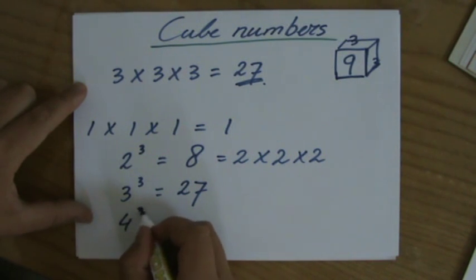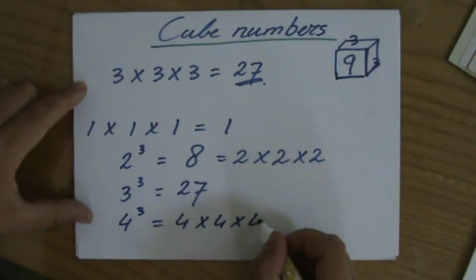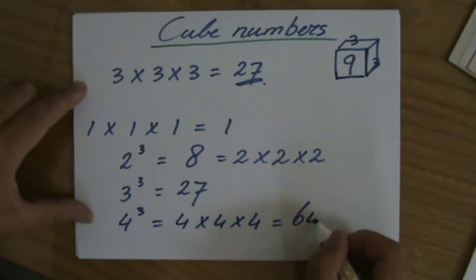4 cubed. The next cube number is 4 times 4 times 4. So 4 times 4 is 16, times 4 equals 64.